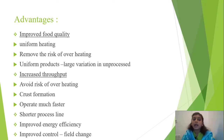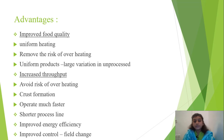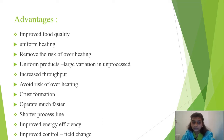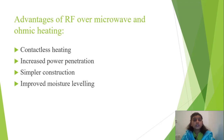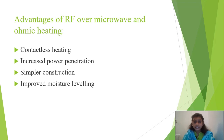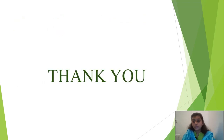Advantages of RF include improved food quality, uniform heating, and removal of the risk of overheating, crust formation, and large variation in unprocessed product. It operates much faster. Advantages of RF over microwave and ohmic heating include contactless heating, increased power penetration, simpler construction, and improved moisture leveling. Thank you for watching this video.